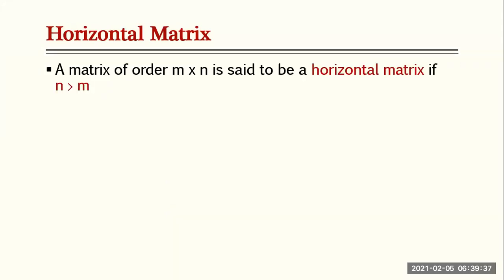A matrix of order m by n is said to be a horizontal matrix if n is greater than m. In other words, if the number of columns is more than the number of rows, the matrix is a horizontal matrix. For example, matrix A is a horizontal matrix because the number of columns is more than the number of rows.